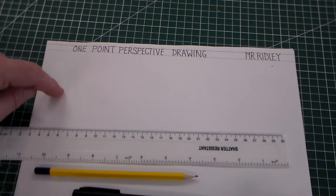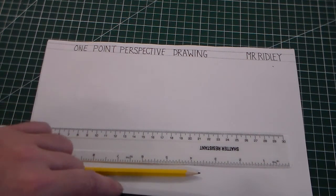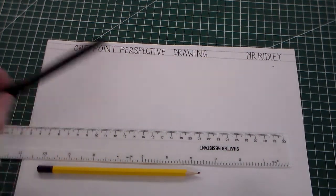So for this lesson I've got a piece of A4 paper, a ruler, a pencil, and a fine liner would be good too.